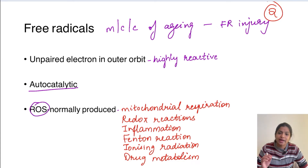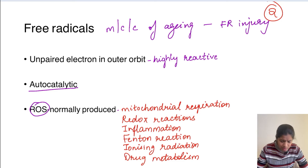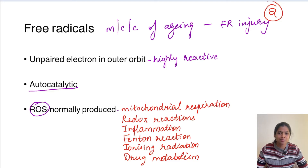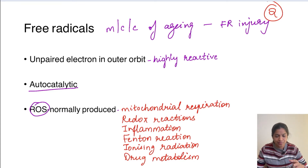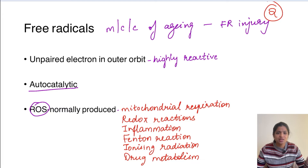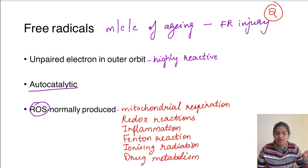ROS - reactive oxygen species - is synonymously used with free radical, but it is actually one type of free radical. Free radicals are normally produced in the body, not only during pathological conditions but also during normal physiology, and they are removed by antioxidants. There is normally a balance between the production of free radicals and antioxidants. Whenever this balance is lost - due to increased free radical production or decreased antioxidant mechanisms - it leads to cell damage and death.